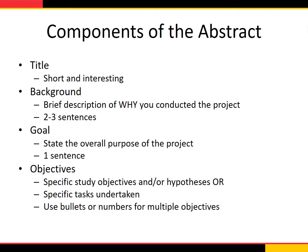For the background section, provide a brief description of why you conducted the research or project. Then explain the gap in knowledge or practice you are fulfilling with your project. You want to let reviewers know why the topic is important. This section should only be two to three sentences. After this is the goal or overall purpose of the project — in one sentence, state the purpose of your project or research. The objectives section should state the specific study objectives and/or hypotheses tested. For some projects, it may be more appropriate to state the specific tasks you undertook, what you did to intervene, or the specific teaching objectives in a pedagogical project. Use numbers or bullets if you have multiple objectives or tasks.